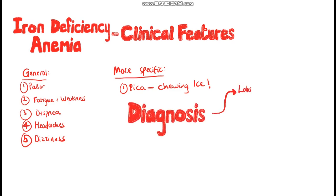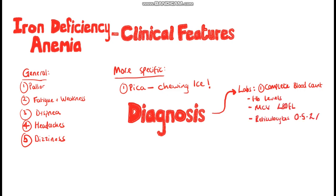Diagnosis of iron deficiency anemia is based on labs and peripheral blood smear. We would request a complete blood count to see hemoglobin levels and the mean corpuscular volume, which we would expect to be below 80 femtoliters. You may also see low reticulocytes, which are a good indicator of bone marrow activity — normally 0.5 to 2% in adults, though in anemic adults you'd expect this percentage to be higher if the bone marrow were working correctly.